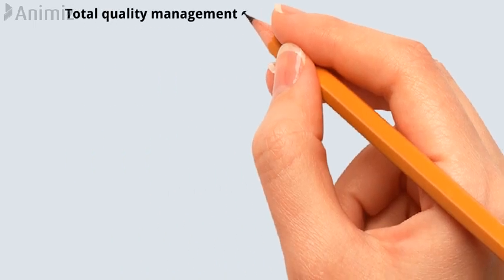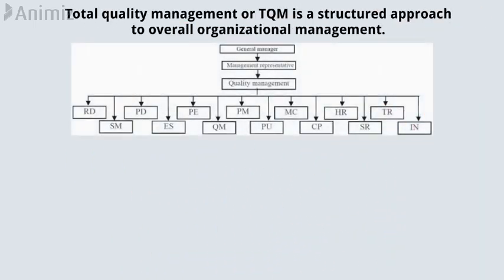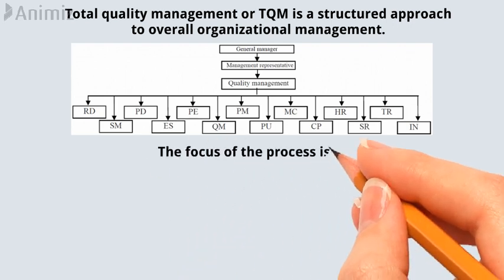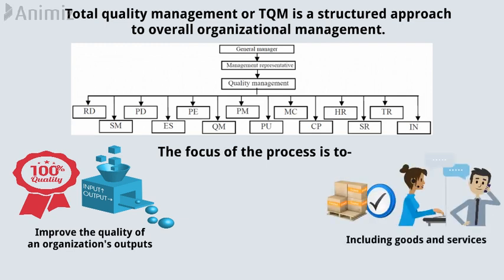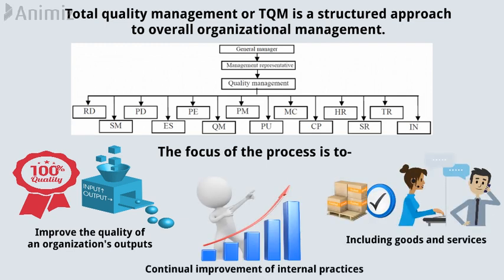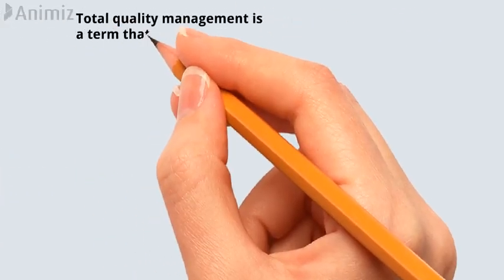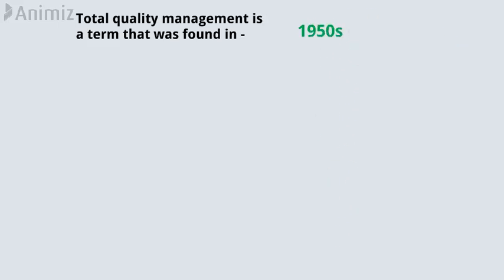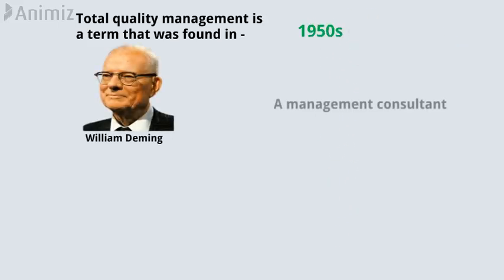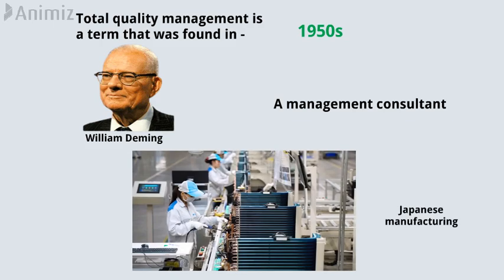Total quality management, or TQM, is a structured approach to overall organizational management. The focus of the process is to improve the quality of an organization's outputs, including goods and services, through the continual improvement of internal practices. Total quality management is a term that was coined in the 1950s, and was developed by William Deming, a management consultant whose work had a great impact on Japanese manufacturing.